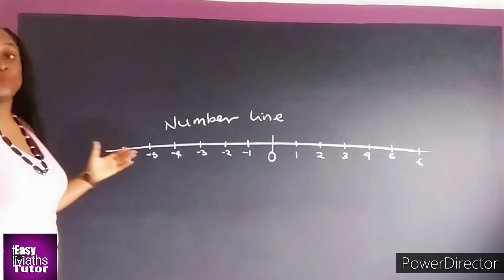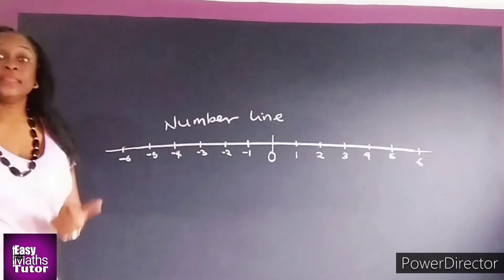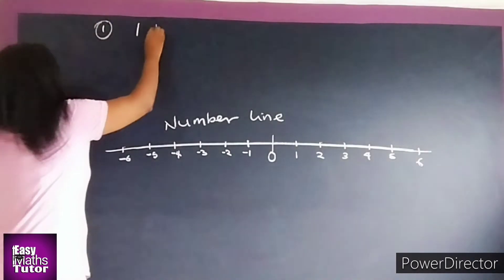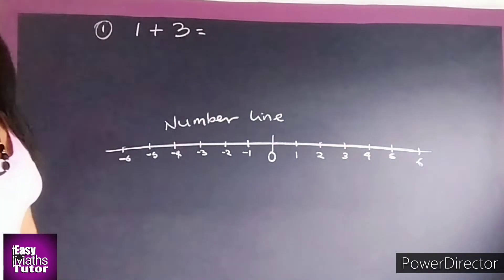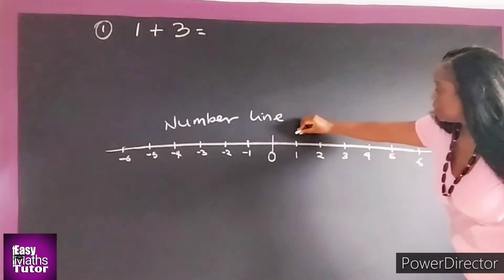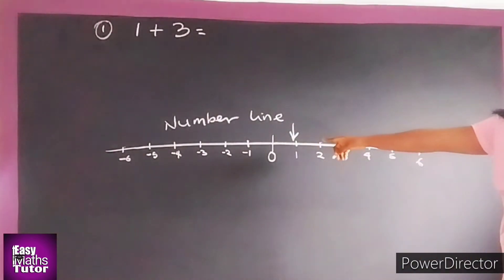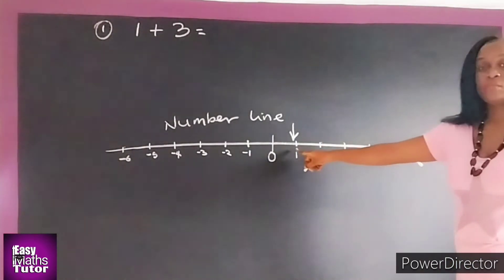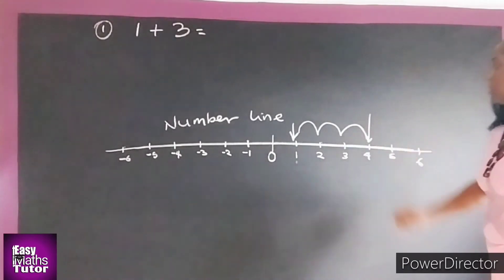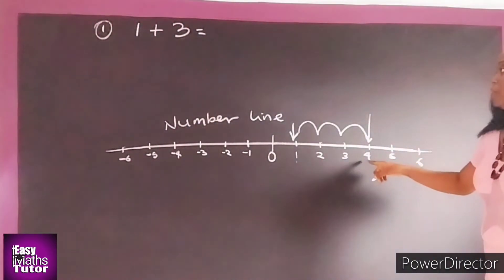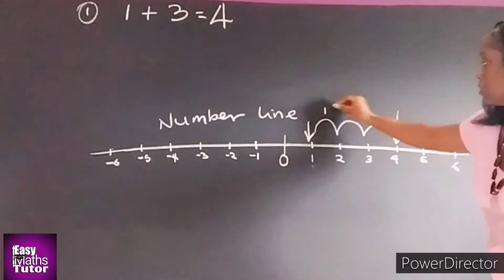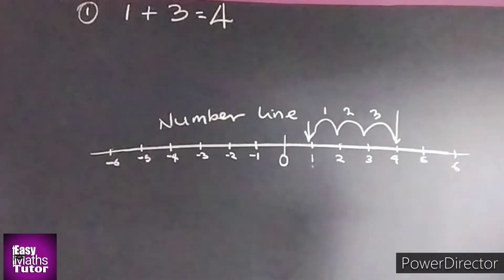The number line is very easy to use. You can use it to add positive and negative numbers. For instance, let's solve our first problem: one plus three. We'll jump on number one on the number line. Then, since we're adding three, we count three steps from one — one, two, three. We hop onto four. Therefore, one plus three gives us four.